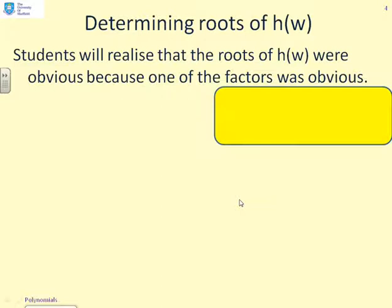Now, students will realize that the roots of h(w) were relatively obvious, because one of the factors was obvious. So let's have a look. We've got h(w) = h³ - h² - 6h, and it should be clear to you that there is a common factor of h in this equation, and therefore I can take that factor out.